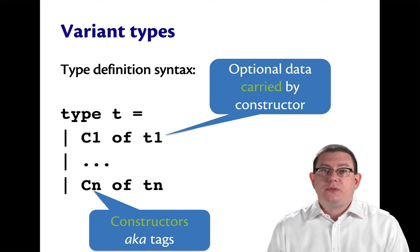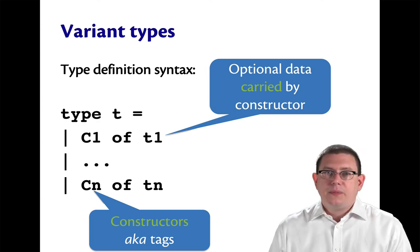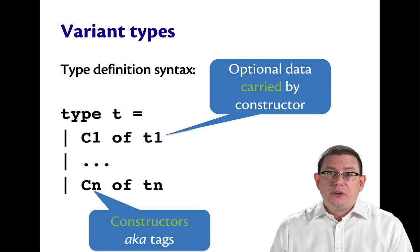It uses vertical bars to separate each of the constructors of the variant type. So those constructors, we could call them C1 through CN here. There could be as many of them as you want or as few as you want.